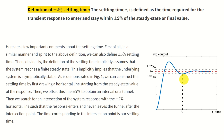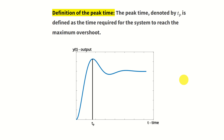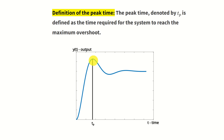Next, let's define the peak time. The peak time, denoted by TP, is defined as the time required for the system to reach the maximum overshoot — that is, the time corresponding to the first peak of the step response. The system can actually have several peaks, but here it is implicitly assumed that TP refers to the maximum peak.